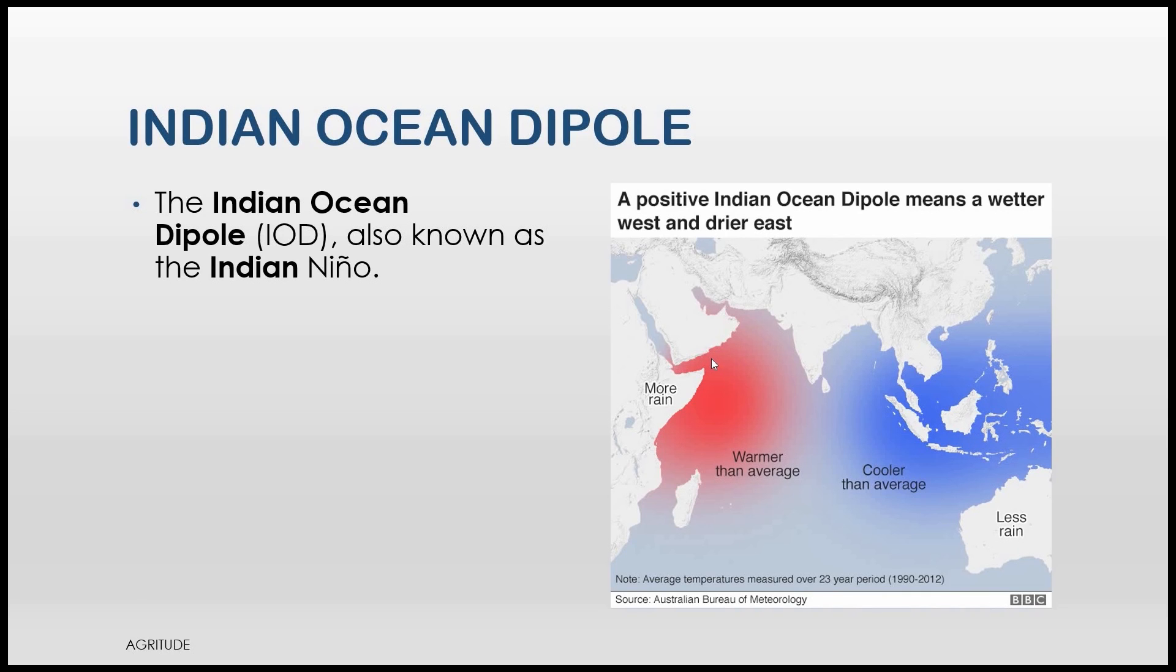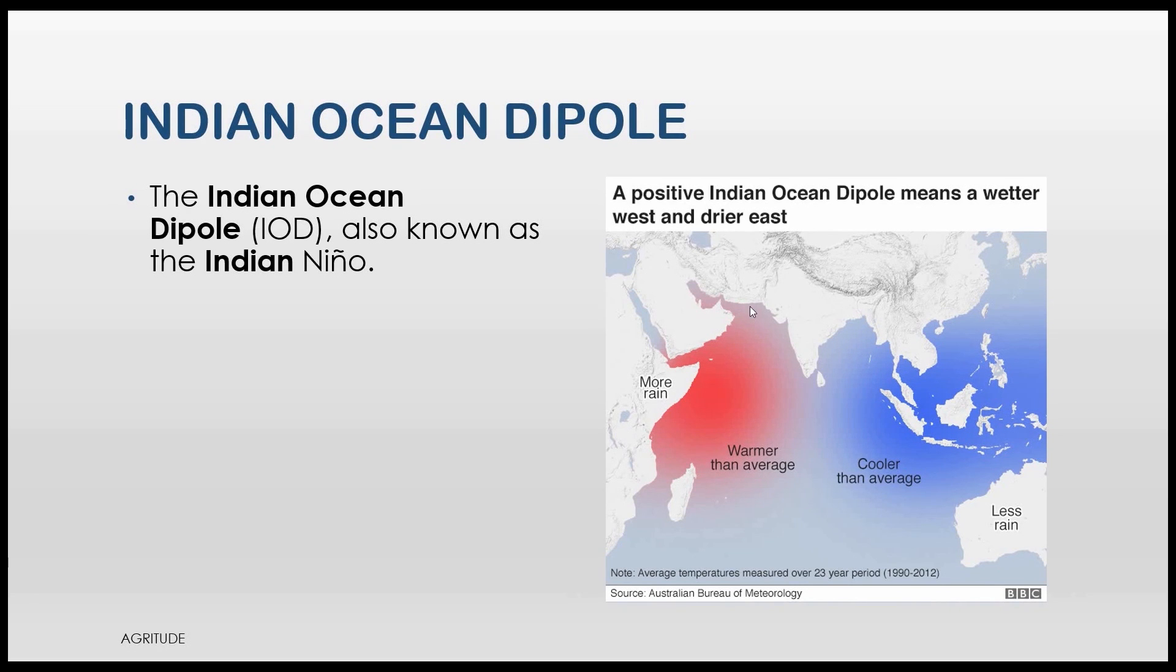and this leads to the rainfall in western part of the Indian Ocean. As the locusts live in this desert region, the rain over this region provided favorable environment to the locust for breeding.